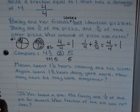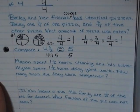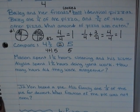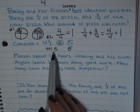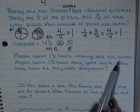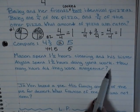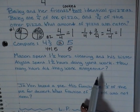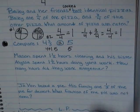Alright, we have two other long problems. If you want to pause the video to write them down and try them by yourself, you can. Okay, first one. Mason spent one and a half hours cleaning and his sister Alyssa spent one and a half hours doing yard work. How many hours did they work all together? And when I see that word all together, I know that they are going to be adding.